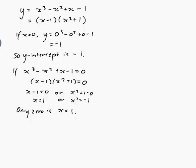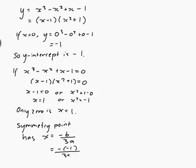But for the moment let's just write that down. Symmetry point has x equals minus b on 3a, which would be, now b is the coefficient of x squared, so that would be minus minus 1 on 3 times 1, which is a third. So y for that point would be what I get when I put x equals a third into that equation.